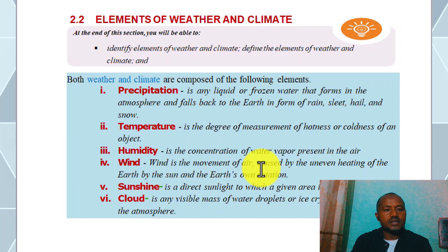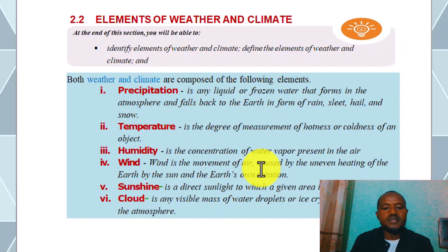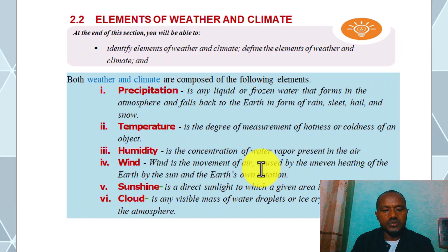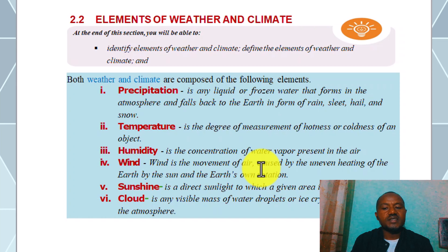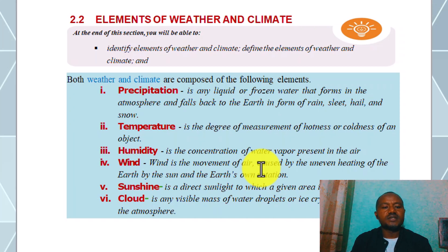The elements of weather and climate include precipitation, temperature, humidity, wind, sunshine, and clouds. Precipitation is any liquid or frozen water that forms in the atmosphere and falls back to the earth in the form of rain, sleet, hail, and snow.